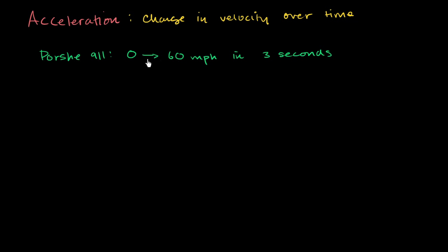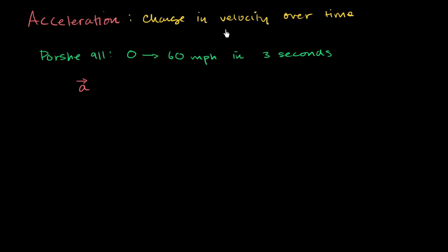Although officially what they're giving you here are speeds, because they're only giving you magnitude and no direction, you can assume it's in the same direction. We could say zero miles per hour to the east to 60 miles per hour to the east. So what was the acceleration here? How can you have direction if you don't have speed?